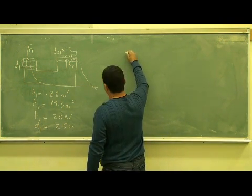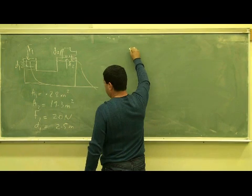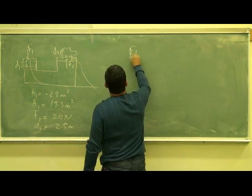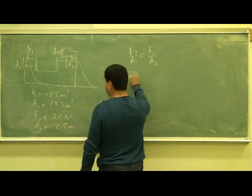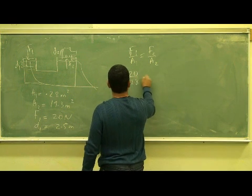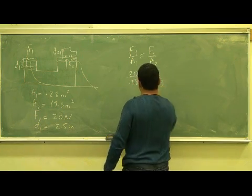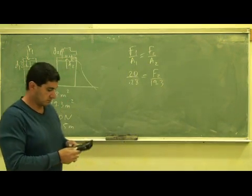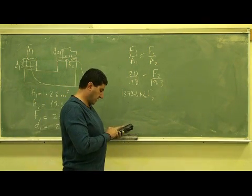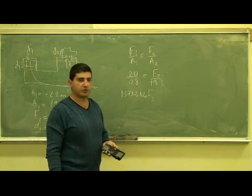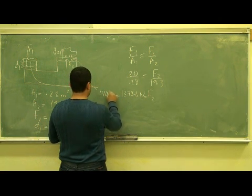So how much force, how much weight of a car can I lift? So we have here F1 over A1 is equal to F2 over A2, and then you have here 20 over 0.28 is equal to F2 is unknown over the area 2, 19.3. So the weight of the car - but that's not really that much because that's only divided by 9.8, that's only a 140 kilogram car, which is not really - that's equivalent to 140.7 kilograms.